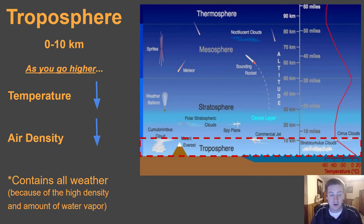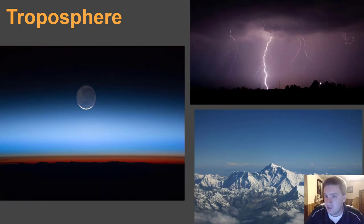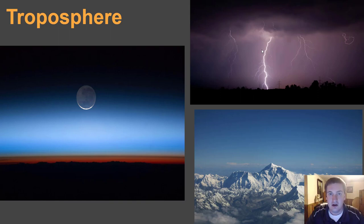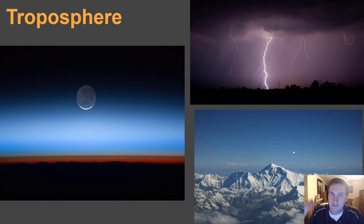The troposphere, because it contains most of the air molecules, contains most of the heavier stuff. It actually contains 99% of the water vapor on the planet, which is why the troposphere is the layer where all weather occurs. When you see a big thunderstorm, those cumulonimbus clouds are forming and topping out at the top of the troposphere. This image I chose because you can kind of see the tropopause — the boundary between the troposphere and the stratosphere. Ironically, even the peak of Mount Everest is still well within the troposphere. That should make sense because we live in the troposphere.